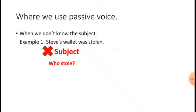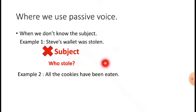Another example: 'All the cookies have been eaten.' The action done here is 'eaten,' but we don't know who ate them. We don't know the person who performed the action. So when we don't know the subject — the person who performs the action — we use passive voice. That is the first use of passive voice.